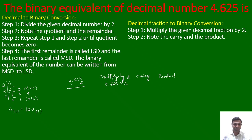Step 2 says note the carry and the product. So write 0.625 multiplied by 2. The result is 1.250. Here we have a whole number, so the whole number is taken as the carry, which is 1, and the remaining part is taken as the product, which is 0.250.